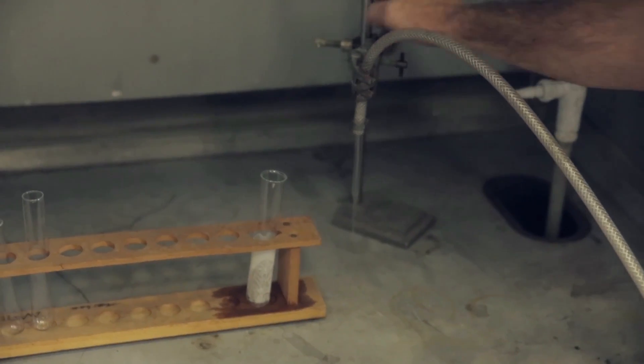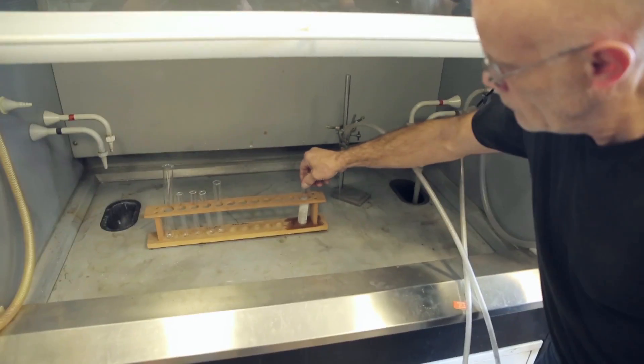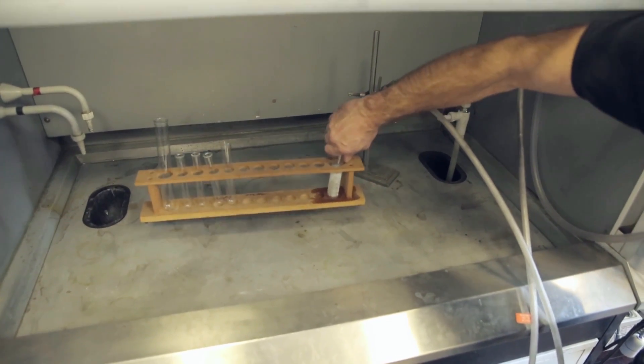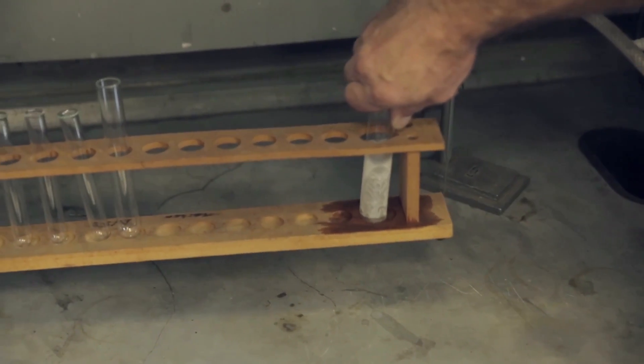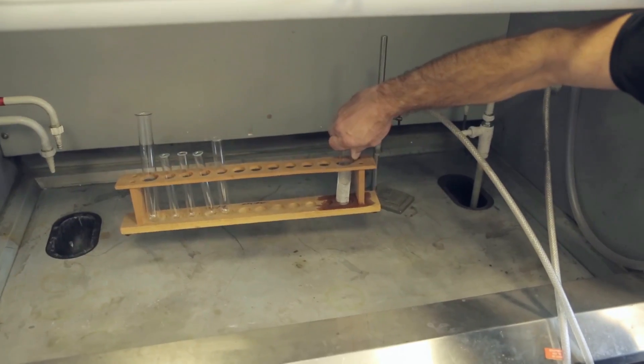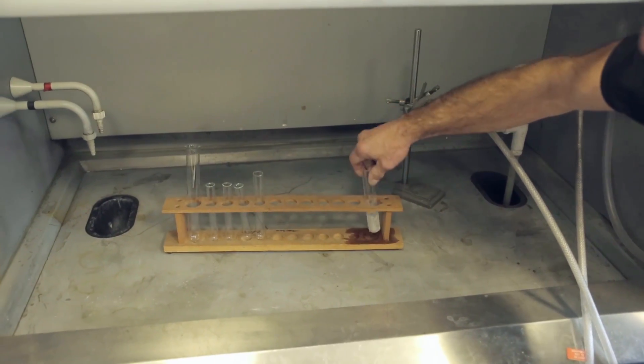And the image that really stuck in Neil's mind was his teacher, Mr. Mouncer, lifting up the test tube and the whole rack coming with it. Neil thinks it's pretty remarkable that you can freeze water just by the evaporation of the ether.